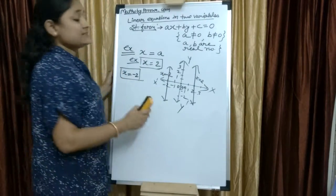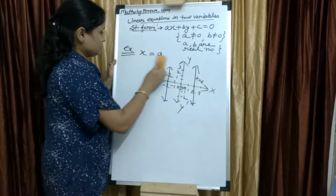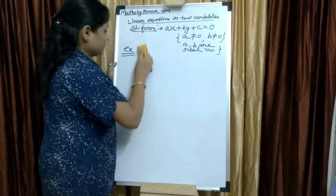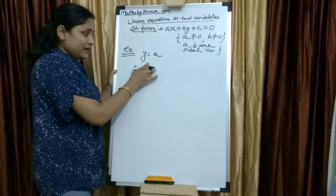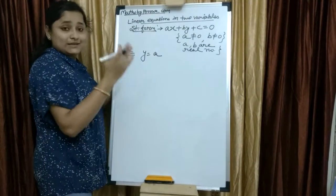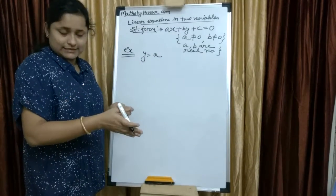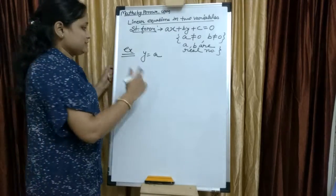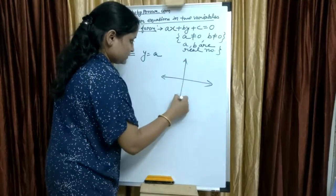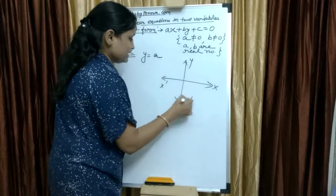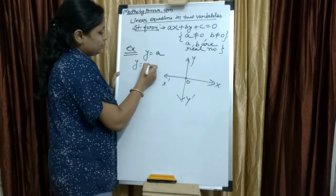Now, we will take an example of y equals to a type graph. Whenever you have y equals to a type graph, it will be parallel to x axis. x equals to a type graph is parallel to y axis, and y equals to a type graph is parallel to x axis. Let's see. We take y equals to minus 1.